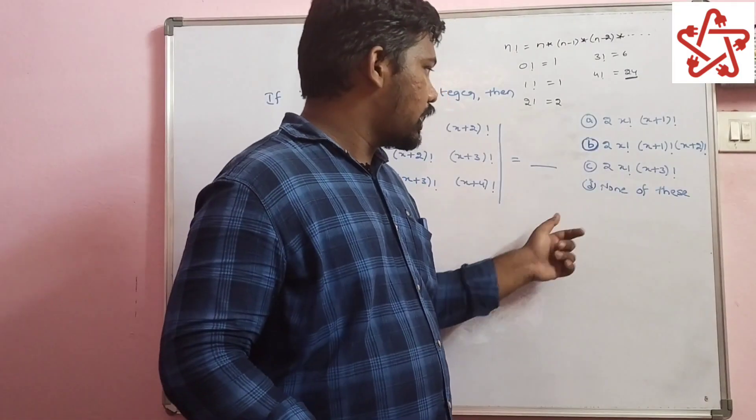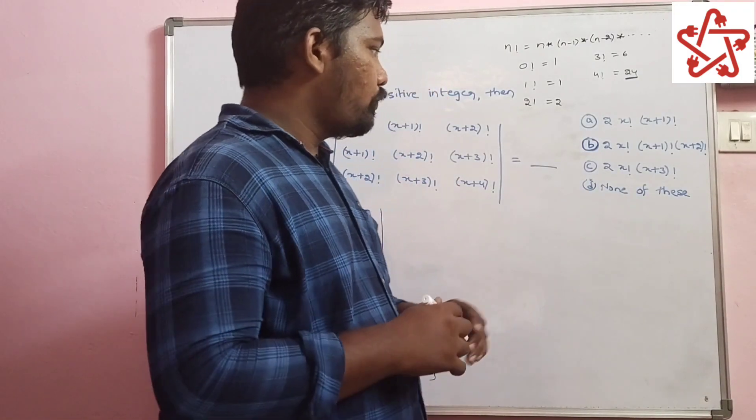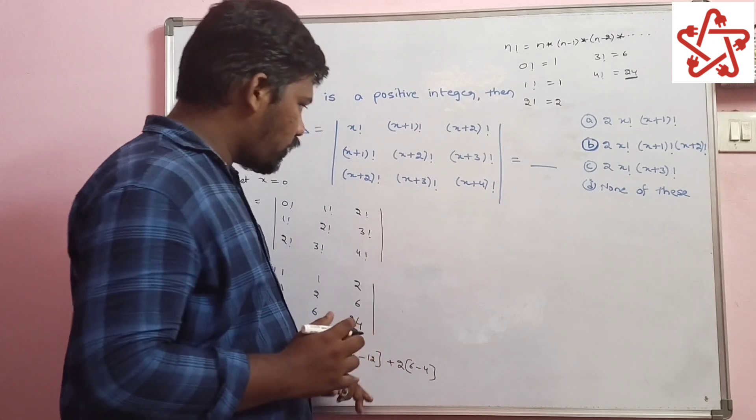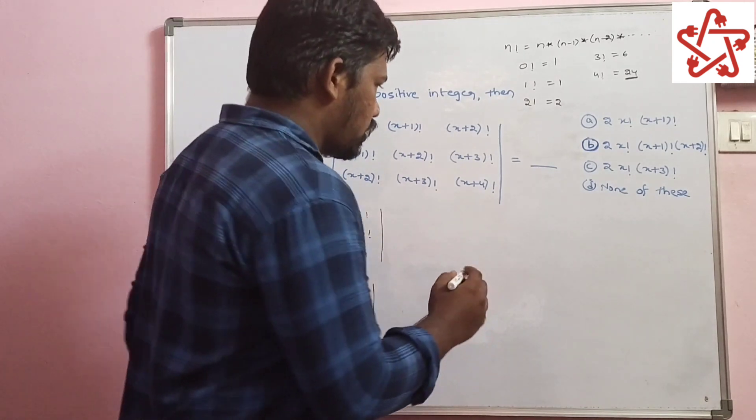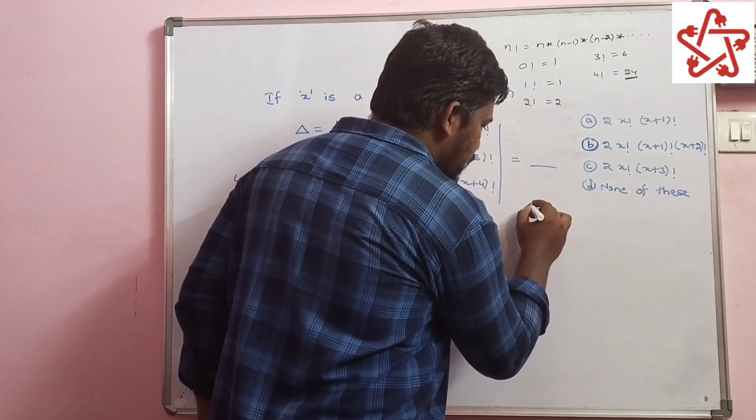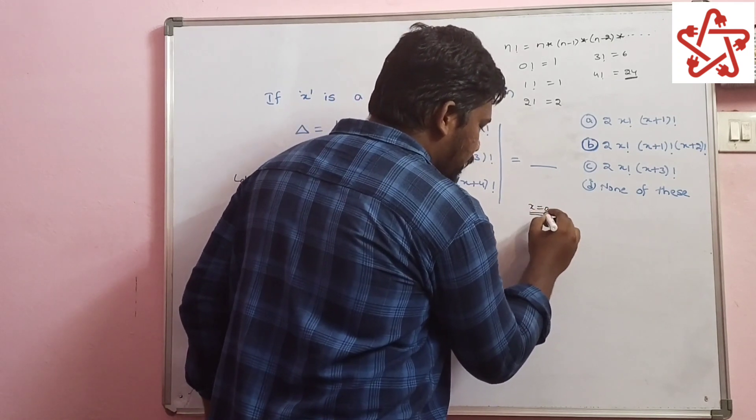So finding the correct option from the given options, we need to substitute the value of x which we considered while solving the question. While solving, I considered x value as 0, so I am considering the same.